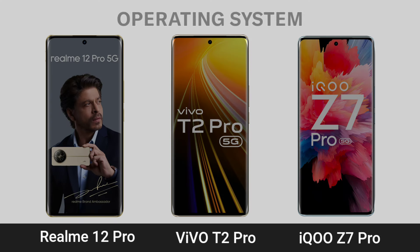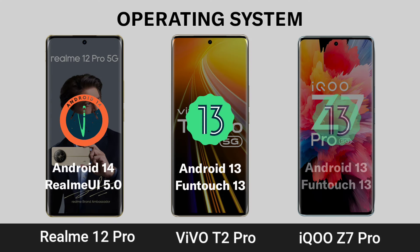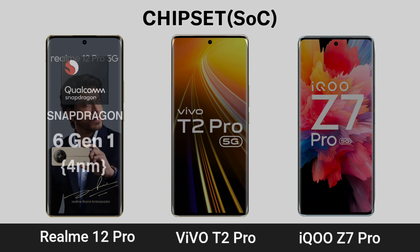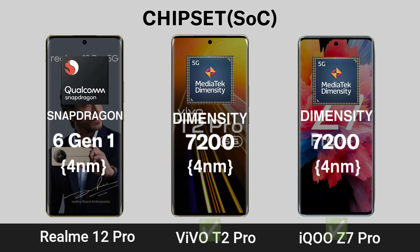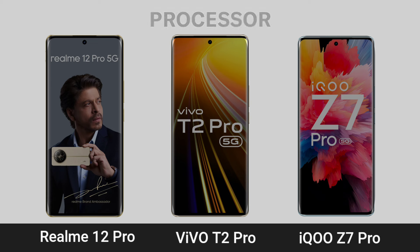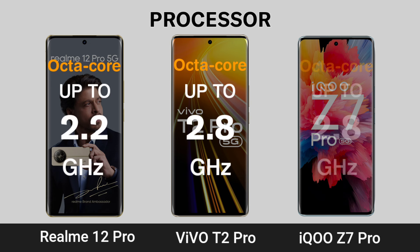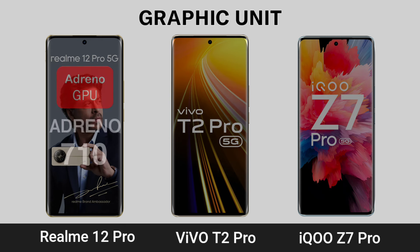Operating system, chipset, processor, and graphic unit comparison across the Realme 12 Pro, Vivo T2 Pro, and iQOO Z7 Pro.